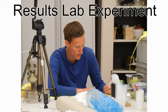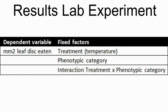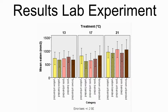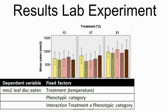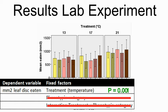In the lab experiment, one snail ended up dead and was removed from the analysis. We used a two-way ANOVA to test for the effect of temperature treatment and morph category on feeding activity, measured in square millimeters eaten. We checked for normality of residuals, homogeneity, and equal variances, which were all acceptable. We started with square millimeter leaf disk eaten as our dependent variable, and treatment, phenotypic category, and their interaction as fixed factors. Only treatment was significant, so we removed the interaction from our analysis. Phenotypic categories were also insignificant, so we removed these as well. We ended up with a p-value for the treatment of 0.001.